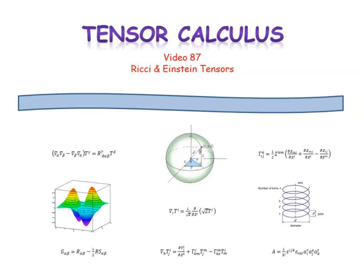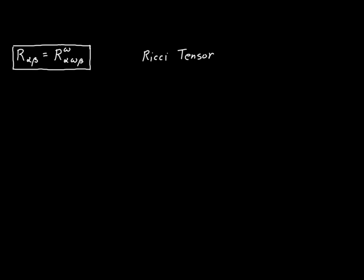In video 87 of Tensor Calculus, we're going to introduce the Ricci tensor and its close relative, the Einstein tensor. Both of these tensors are derived from the Riemann-Christoffel tensor by means of contraction. We begin with this very simple definition: we take our Riemann tensor and form a contraction between the upper index and the middle index on the bottom, and the result is this object known as the Ricci tensor.